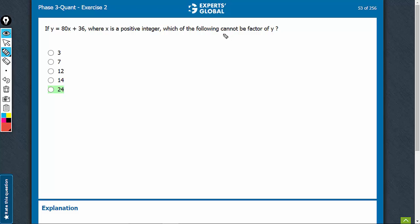The question is asking which of the following cannot be a factor of y. We just need to find optimistic scenarios where they may be a factor of 80x + 36. When we are not able to find such an optimistic scenario, we have the right answer choice.